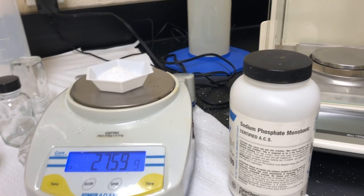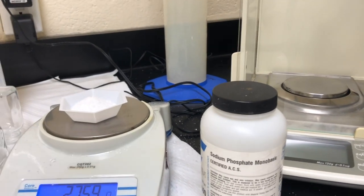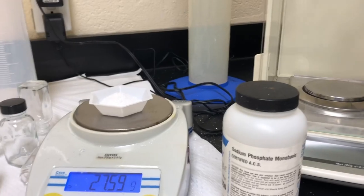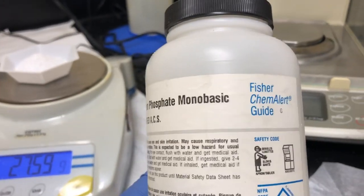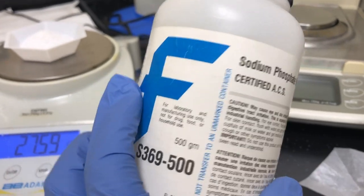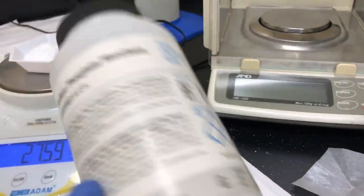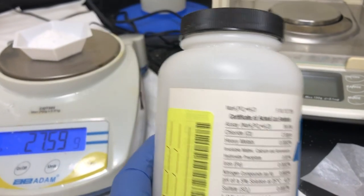Hello everyone, so today we're going to be making sodium phosphate monobasic. What you want to do is grab your materials. So as you see here, sodium phosphate monobasic, the molecular weight can be found on the side.